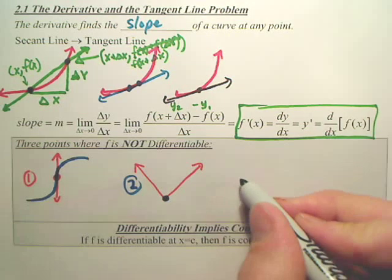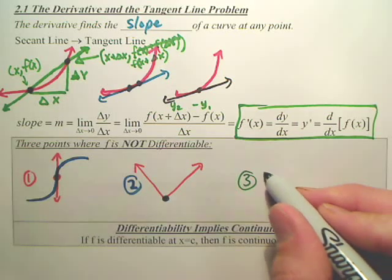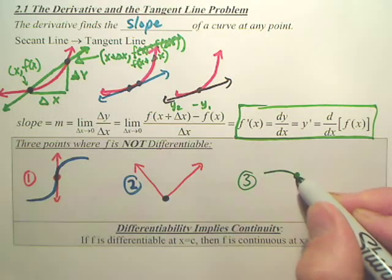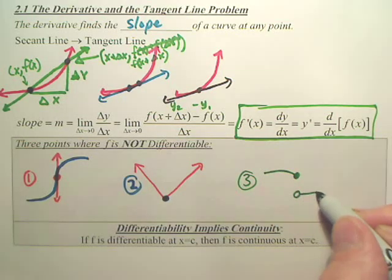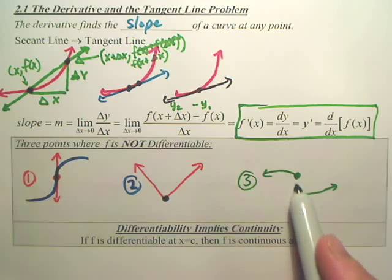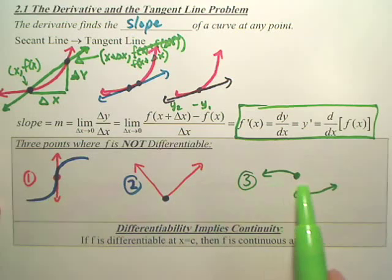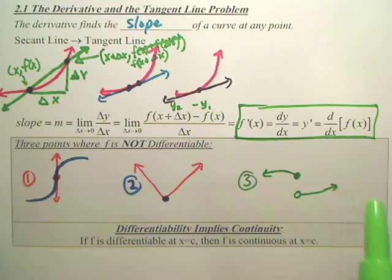And the third point that has no slope, basically. Is that one pretty obvious? Yeah. It doesn't have a limit. It doesn't have a slope. They don't even hit. They have two different slopes. They don't meet at all. So if you have a break, that's a third where you do not have a slope or derivative.